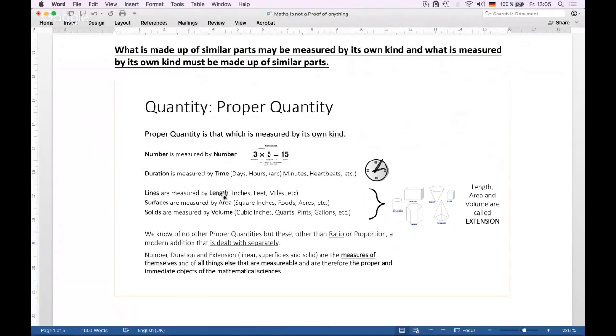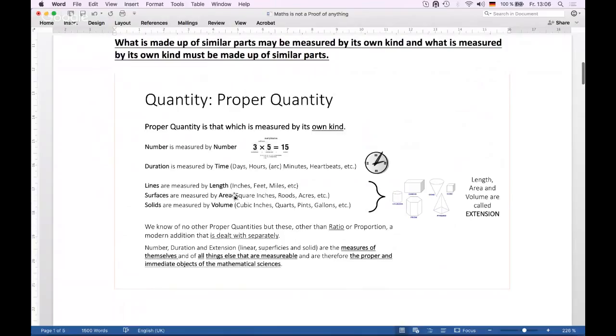Lines are measured by length. Surfaces are measured by area. Solids are measured by volume. So if you like, all these things can be measured by themselves. If I want to measure the length of a line, then I take a small line, as in a ruler, and I try and see how many times that ruler can fit into a longer line. So a line itself is measured by a smaller line or a length that we define. So it's measurable by itself or by its own kind.